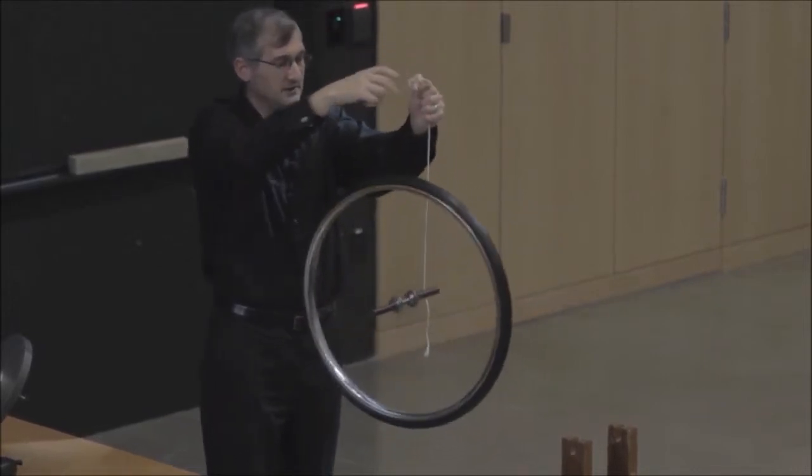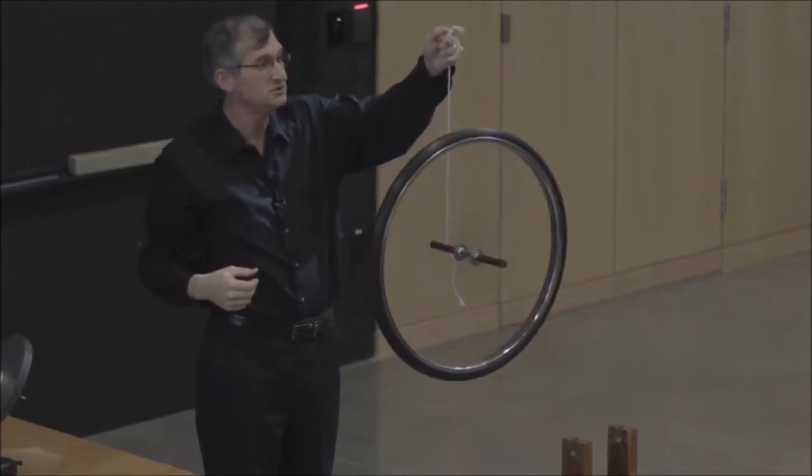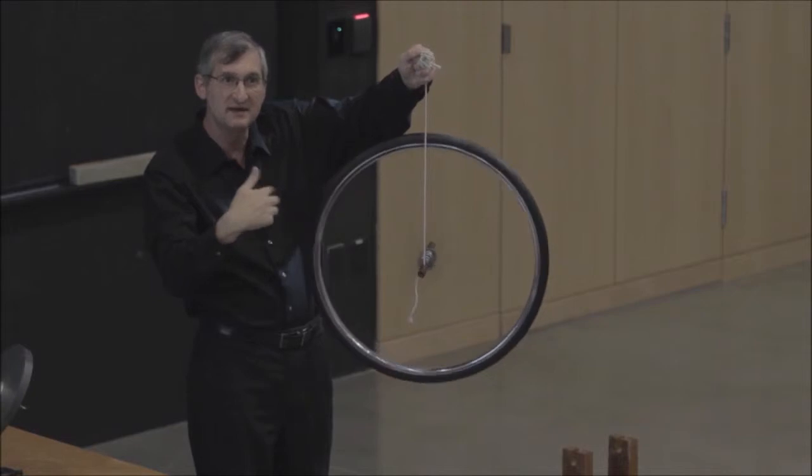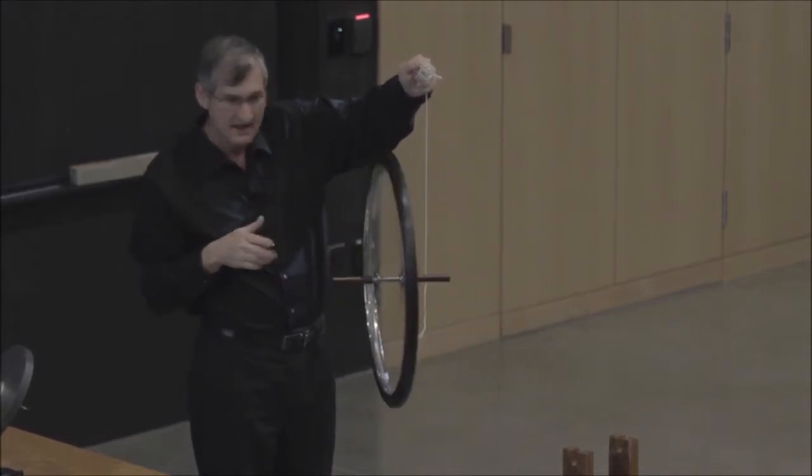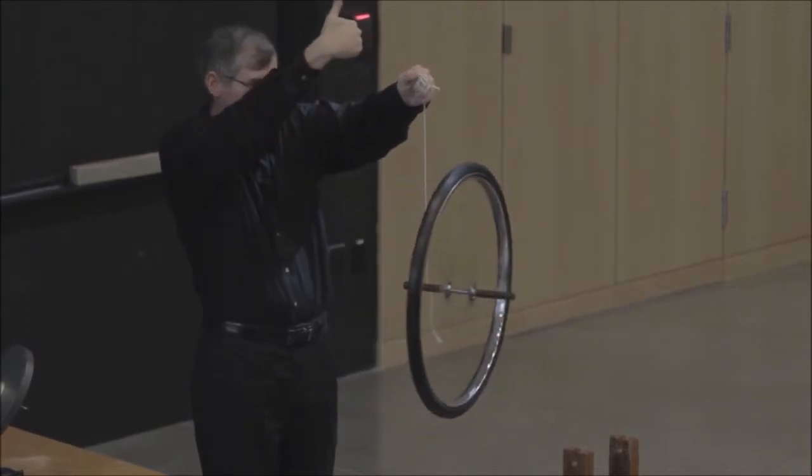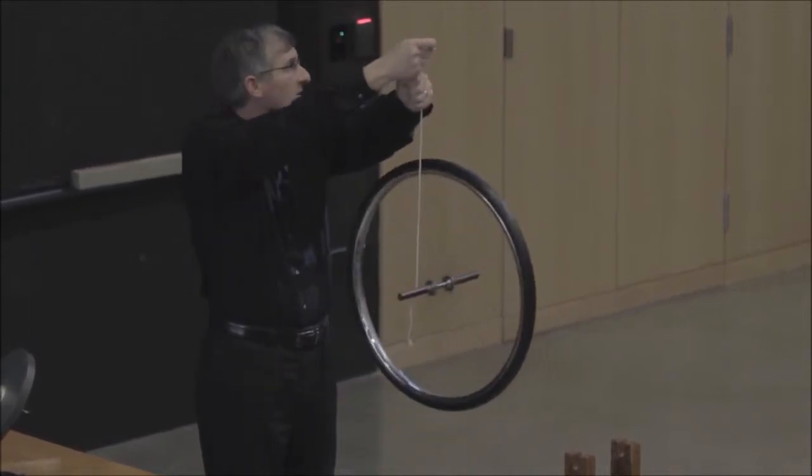So there's two, besides the wobble, there's two kinds of angular motion. There's the rapid spin about the axle, and there's the slow rotation about the vertical.